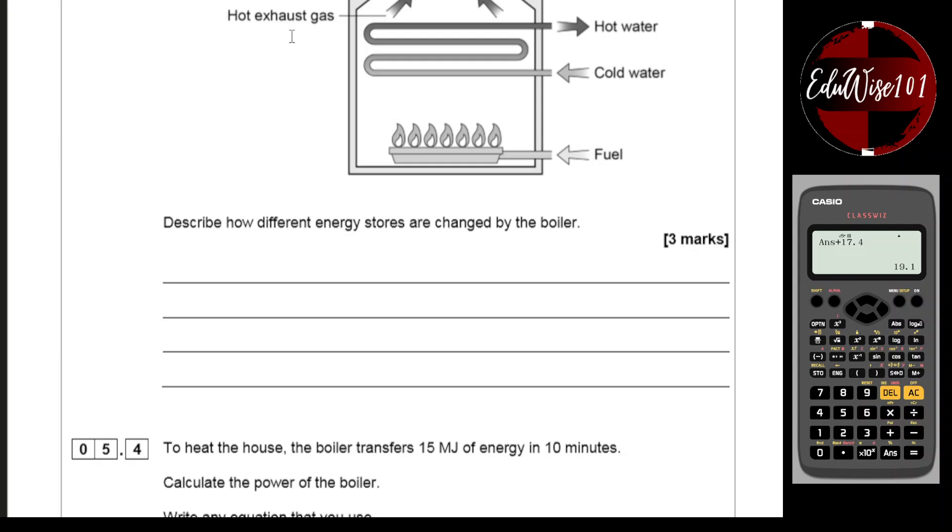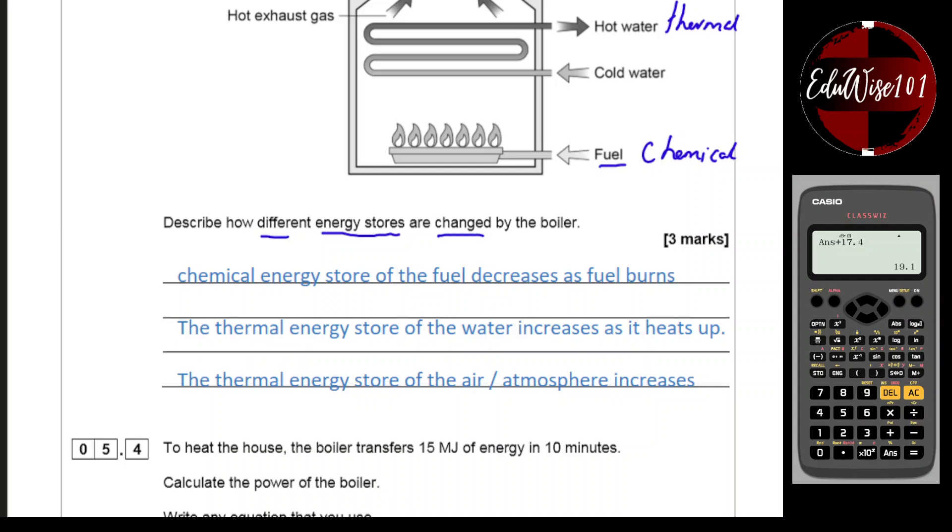So the different energy stores would be coming from the fuel, which is chemical energy store. And the hot water is actually thermal because it's getting hot. Now you need to say what actually happened or in terms of how they actually changed. So how would you write this answer? What's happening to the chemical energy store of the fuel? Well obviously, as it burns, the fuel's energy store is actually going down. And as the water gets hot, its thermal energy increases.